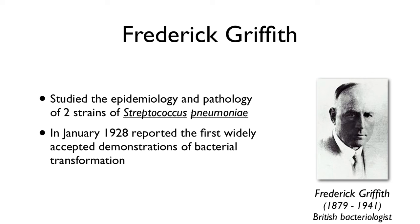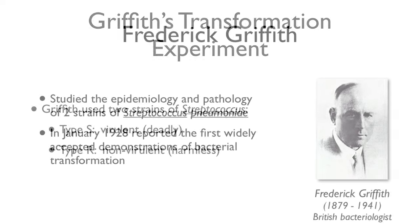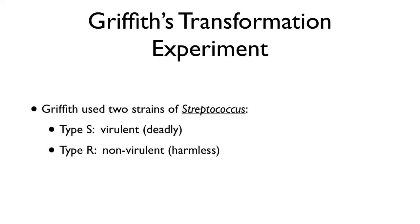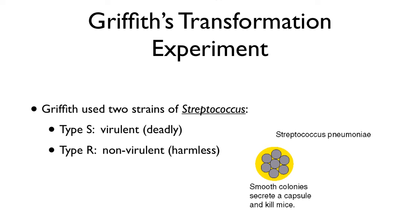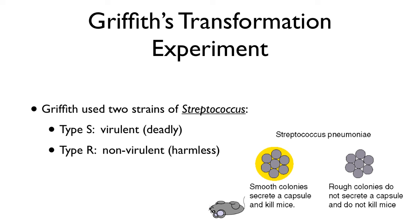Frederick Griffith was a bacteriologist who studied two strains of Streptococcus that caused pneumonia, and he was the first person to demonstrate bacterial transformation. He used two strains: Type S (smooth), which make a capsule that makes the bacteria virulent and deadly, causing mice to die; and Type R (rough), which is non-virulent and harmless — mice exposed to it do just fine.